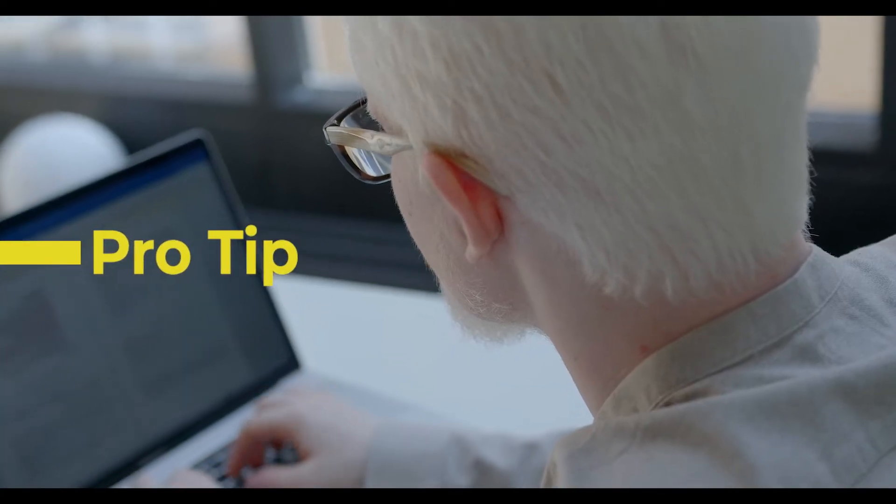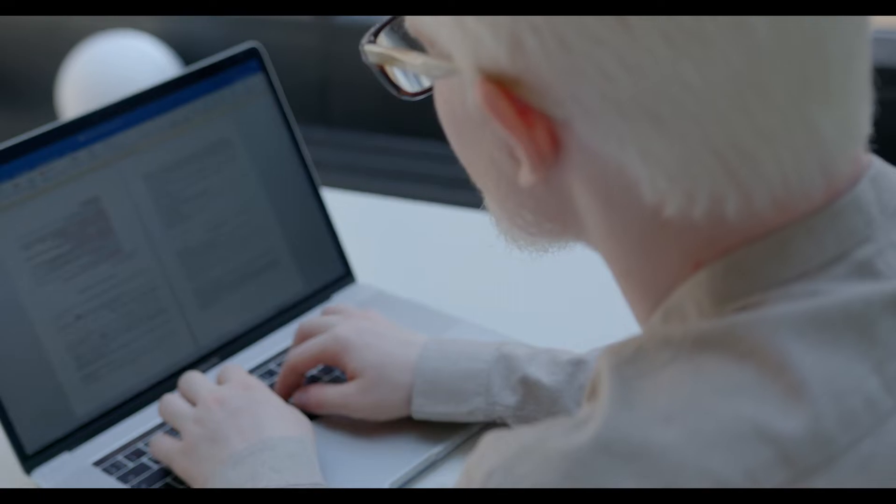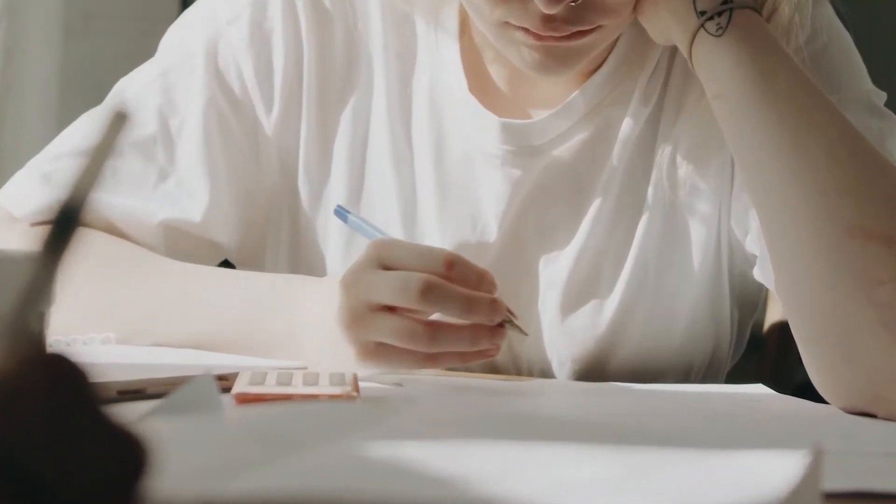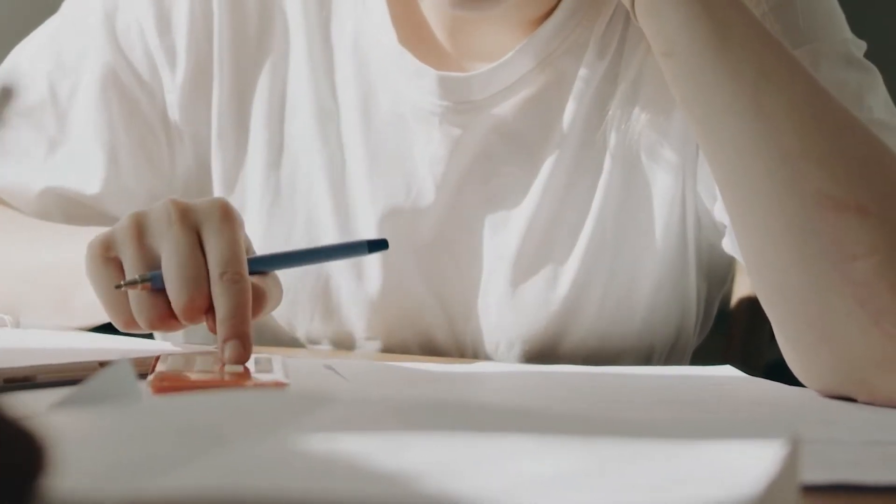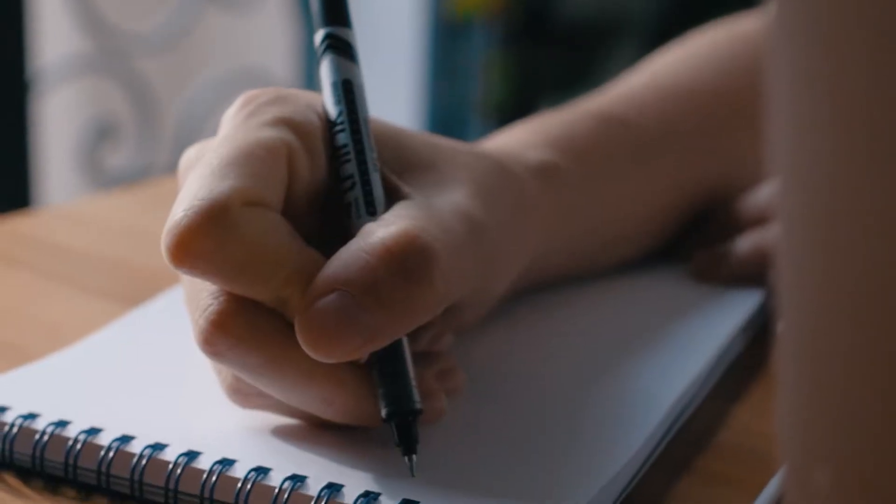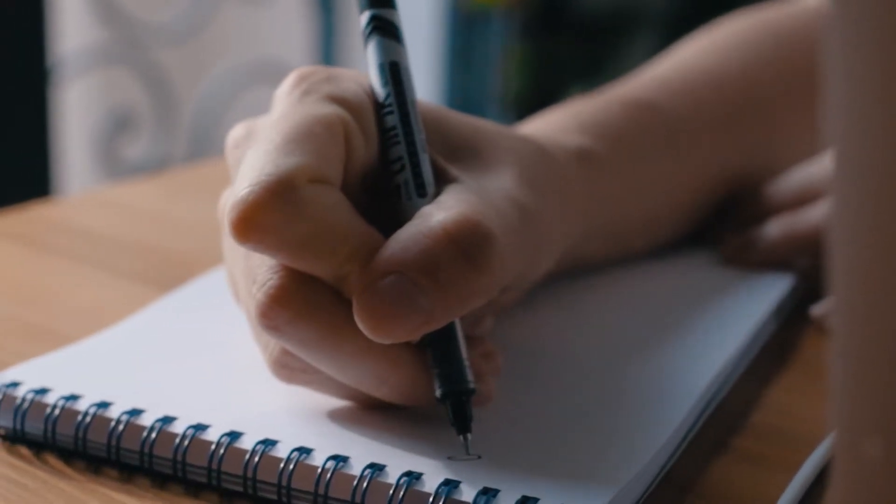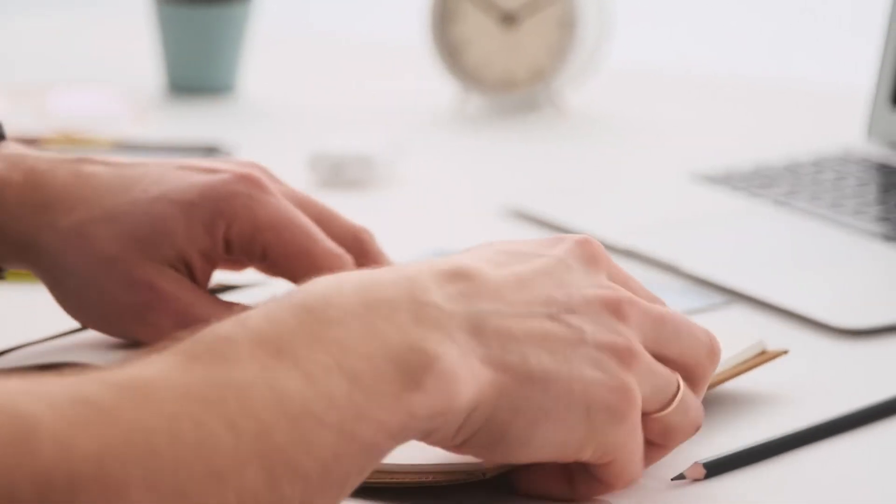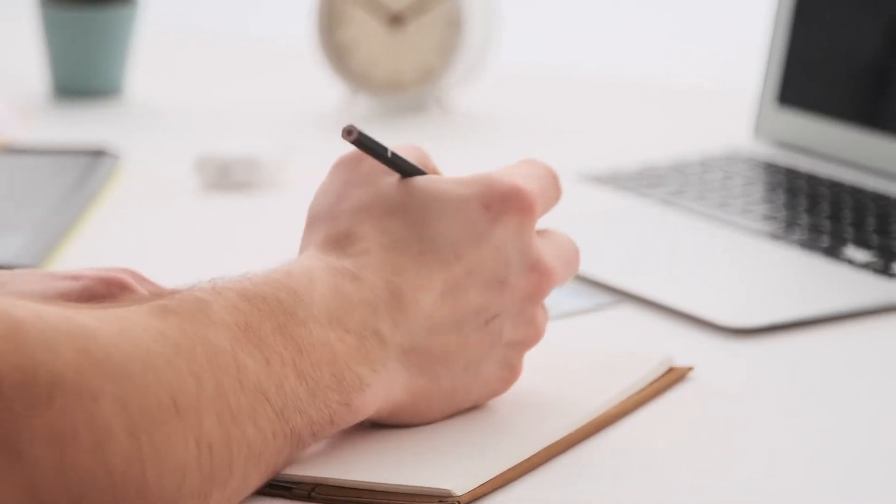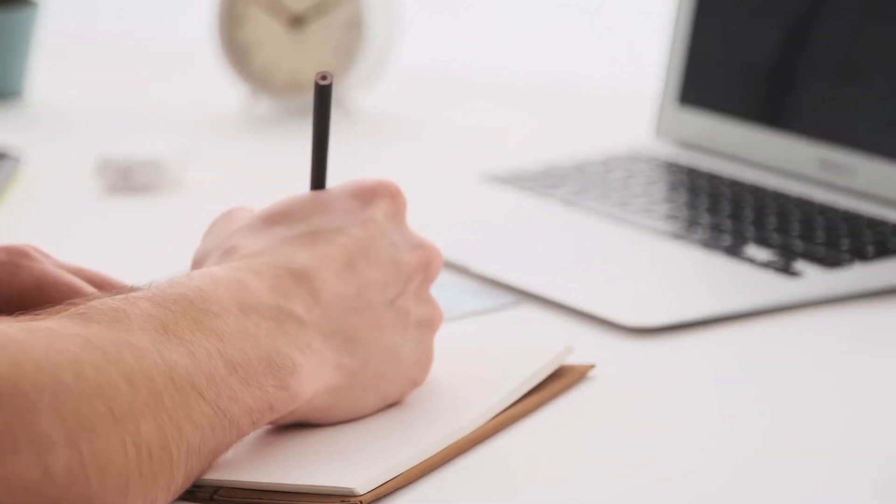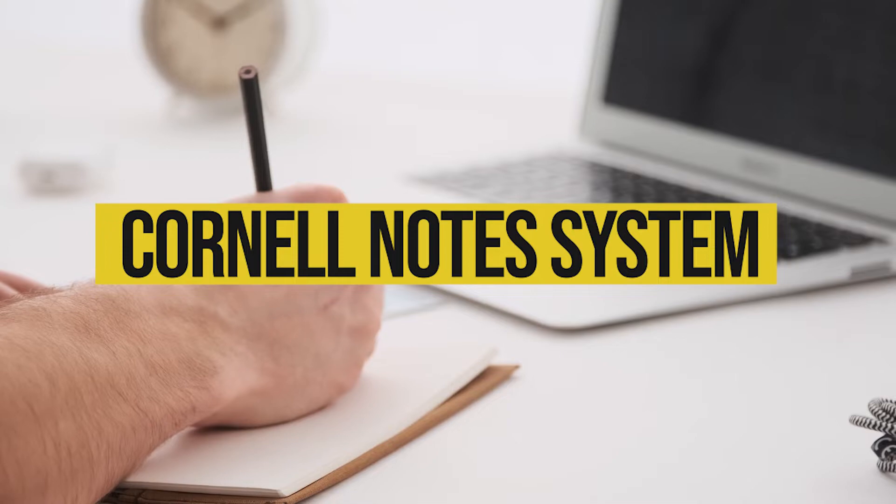Pro tip for those who are studying: active recall can be used in several forms, such as when taking notes, write questions that refer to your notes. When you're revising, your notes will prompt you to actively think and answer those questions rather than passively reading your notes. For this purpose, I strongly recommend to use the Cornell notes system.